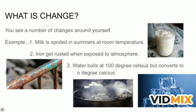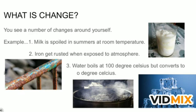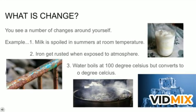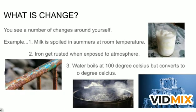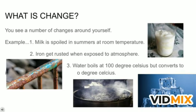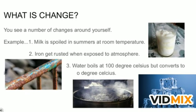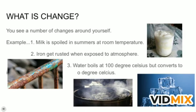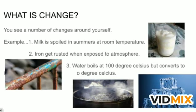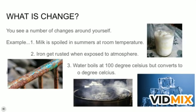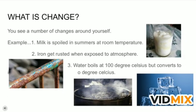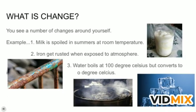Another example: if you have an iron rod and you put it outside in the open atmosphere or in water, after a long time you will observe that it becomes reddish-brown in color. A layer forms, meaning the iron gets rusted. So this is another example of change.